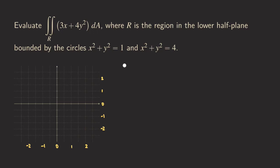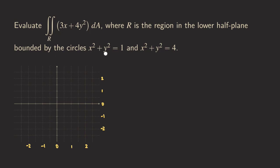Hello everyone, it's Wilson here. Today let's talk about evaluating this integral. The region is what we need to focus on when setting up the integral, because that's usually the difficult part with double integrals. The region is in the lower half plane, so we are in the third and fourth quadrants, bounded by the circles x² + y² = 1 — a unit circle centered at the origin — and then the other circle of radius 2.